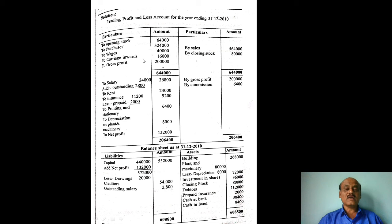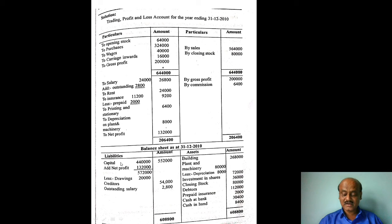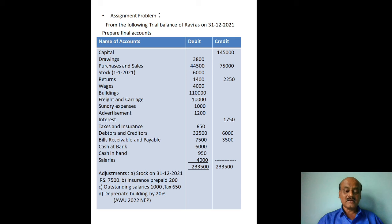This was problem 3 — trading account, profit and loss account, and balance sheet — worth 12 marks. Now a second practice problem: from the following trial balance as at 31st December 2021, prepare final accounts.